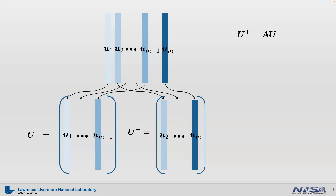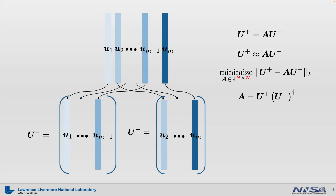That is quite an assumption. Of course, it would be hard to find a linear operator that exactly maps one time step image to the next for every single time step. So DMD tries to find an operator A that does the update approximately. One way of finding such an operator is by solving the following minimization problem. This minimization problem actually has an analytical solution, which is U-plus times the pseudo-inverse of U-minus.